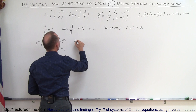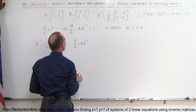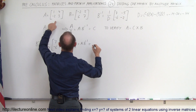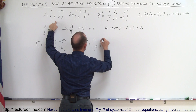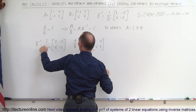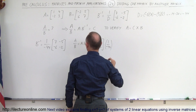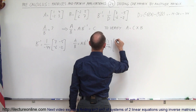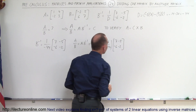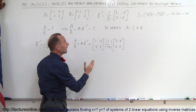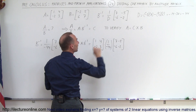So A divided by B, which equals A times B inverse, is equal to matrix A — which is 1, 4, negative 2, and 3 — times 1 over negative 44 (a constant), times the matrix 7, negative 5, negative 6, and negative 2. We can move the 1 over negative 44 to the front and multiply the two matrices together.